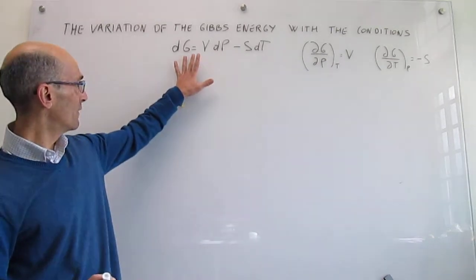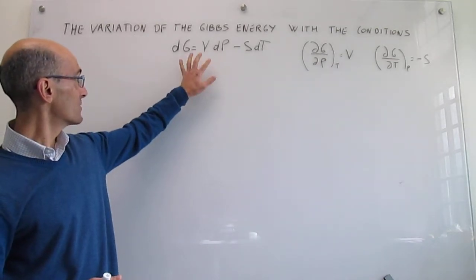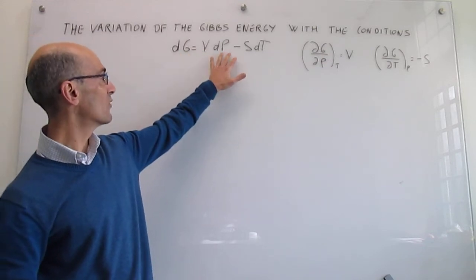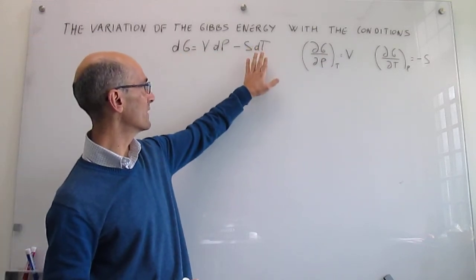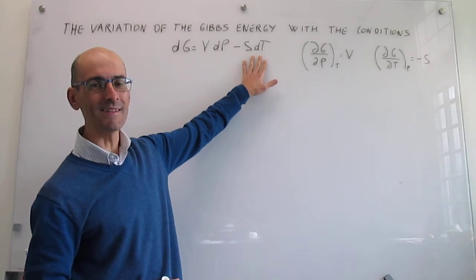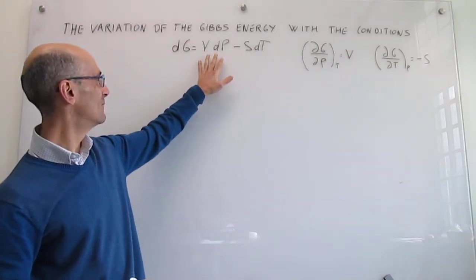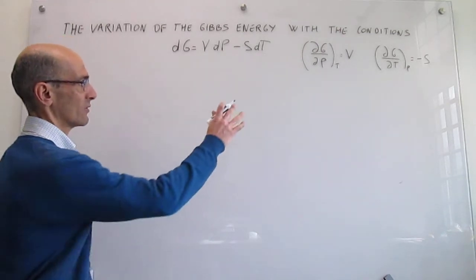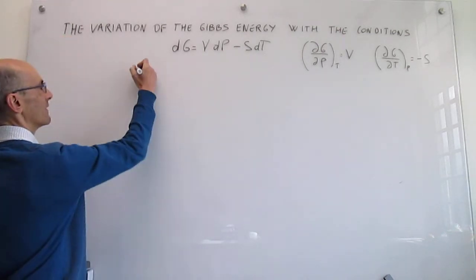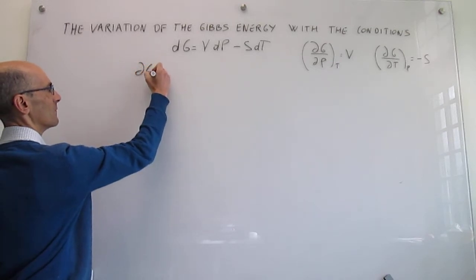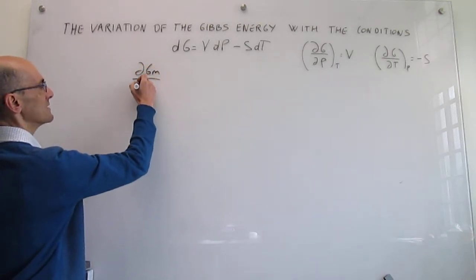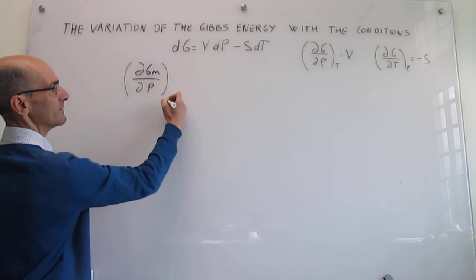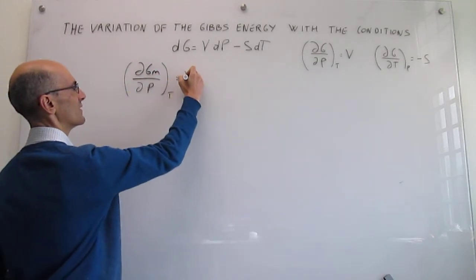Here is the fundamental equation for Gibbs energy, showing the dependence on both pressure and temperature. We've already talked a lot about the temperature dependence, now we're going to focus on the pressure dependence. I'm going to take this first derivative and use molar quantities, because it's a little bit more intuitive to do that. At constant temperature, that derivative is the molar volume.